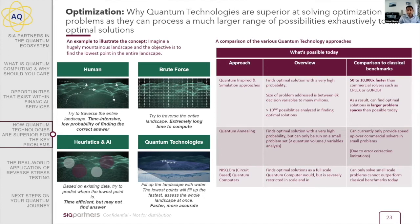With quantum technologies, imagine filling that mountainous landscape with water slowly — the water would be drawn into the deepest position, the deepest point in the valley. With a drone-level view, you can start to see where the pools of water are forming. That is a view of how quantum technologies are able to find optimal solutions to optimization challenges. In quantum technologies, the concept of training data doesn't really exist — it looks at each situation independently and finds the best answer.